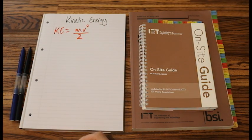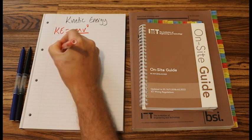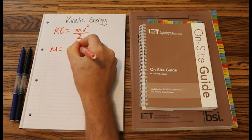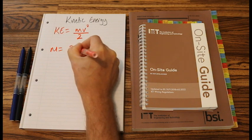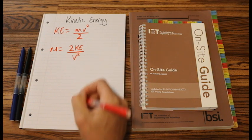Now let's transpose that formula. So we'll have m equals 2KE, 2 times KE over v squared.